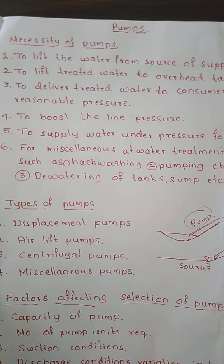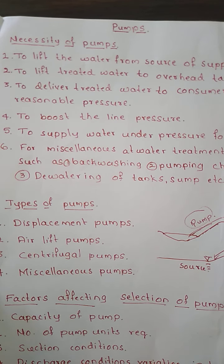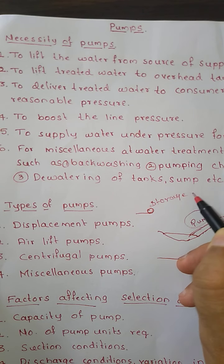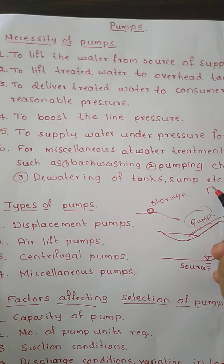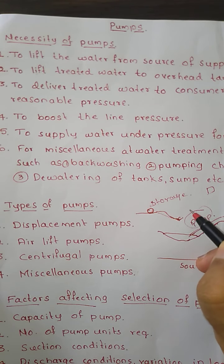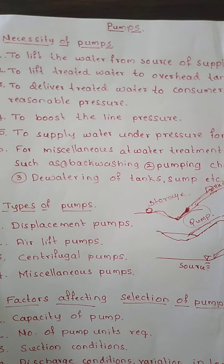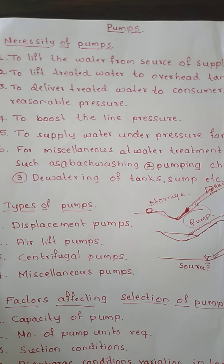The third necessity is to deliver the treated water to the consumer taps at reasonable pressure. Sometimes from the treatment plant there is a downfall, and then the residential area where water has to be supplied is again situated at the upstream portion. The water will flow under gravity till a certain point, but when we want to supply the remaining portion, we need the pump. With the help of pump, we supply the water.